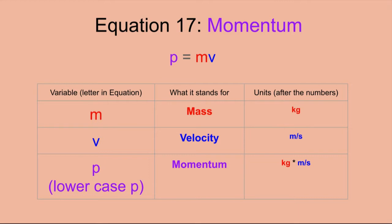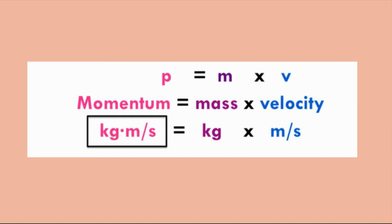The units for momentum are kilograms times meters per second. This is because momentum is mass times velocity: the variable m stands for mass with units of kilograms, and v stands for velocity with units of meters per second. When we multiply mass times velocity, we multiply their units — kilograms times meters per second — and those become the units for momentum.